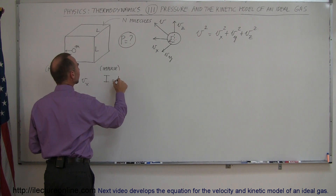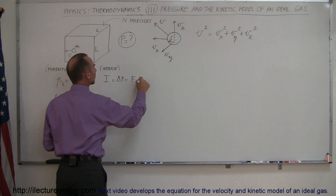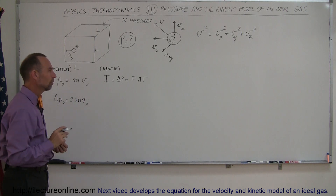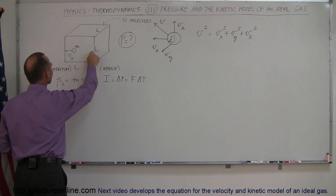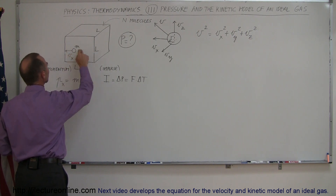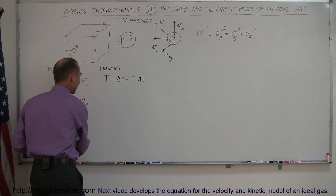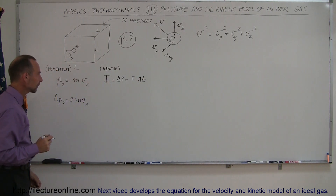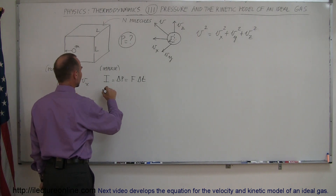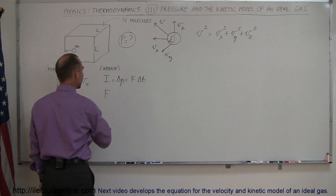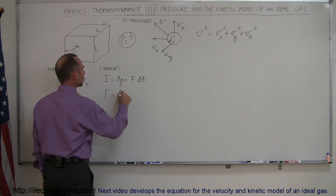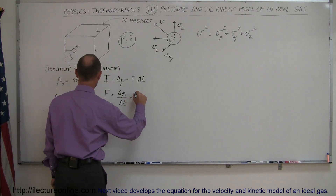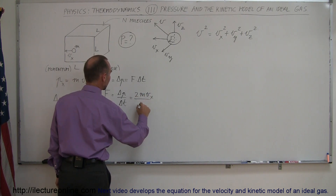The impulse — I'll use I — is defined as the change in momentum, which also equals force times time. That time is how long it takes for that molecule to undergo that momentum change. Since the molecule travels from one end of the box to the other and back, this collision only happens once every time it travels twice the length of the box. So force equals the change in momentum divided by time, which is 2mv_x divided by delta t.